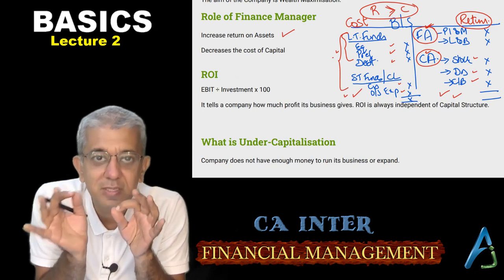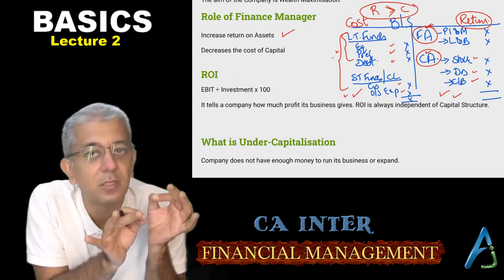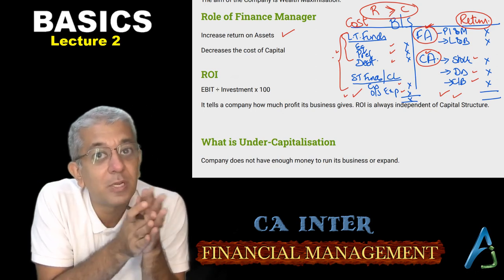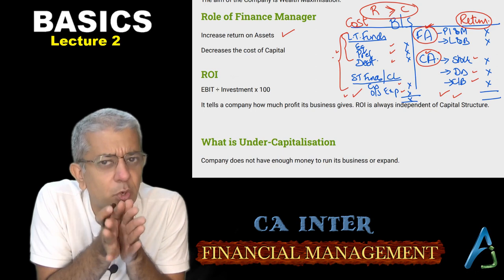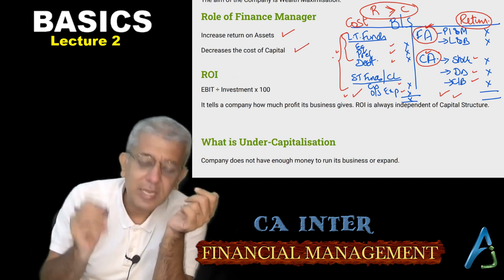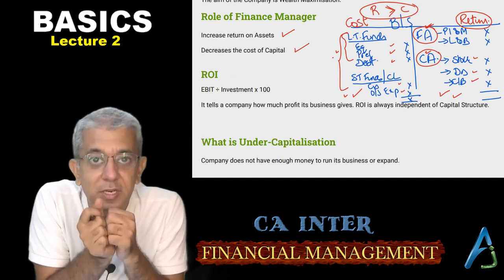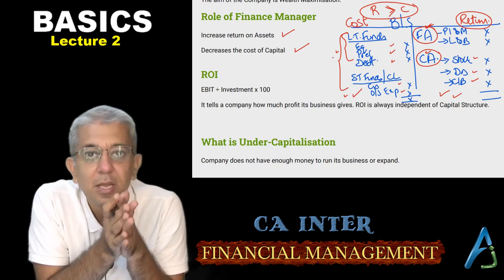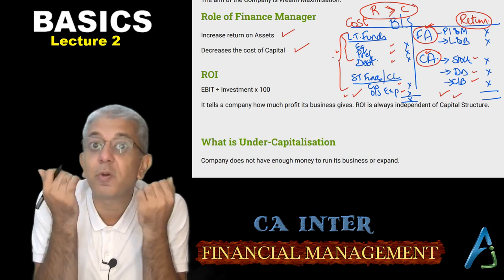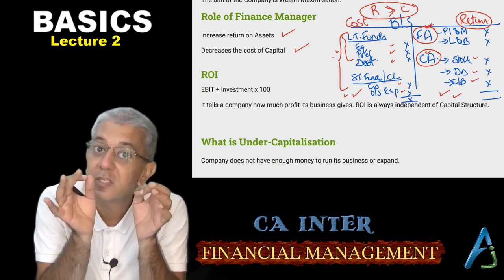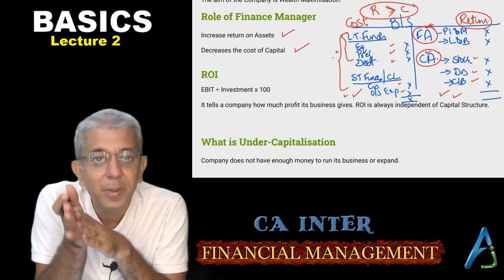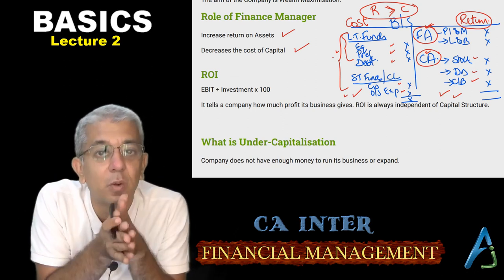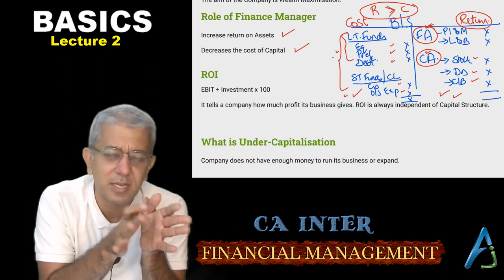The role of a finance manager is to use funds for businesses which give high returns — this is what we will learn in the chapter called capital budgeting, which covers which business to do and which not to do. The other part is to decrease the cost of capital — procure funds from sources where cost is lower, such as international markets where the cost of funds is far lower than in India, even after accounting for processing and transaction costs.